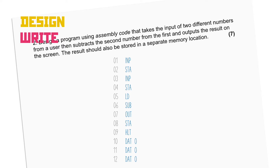Second step: put your line numbers in. Third step: identify all the instructions that need operands and write in the correct line numbers. STA on line 2 needs the location we want to save that value to — let's stick that in the first DAT line, that's line 10. On line 4 we've got the same thing but for the second number, so we'll pop 11 in there. Line 5 wants us to load the first number back up, so we'll put 10. SUB needs the second number, so we'll put 11 in there. Finally we're storing the answer on line 8, so let's store that in the third DAT location on line 12.